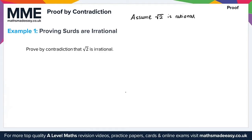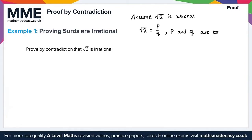Now if root 2 is rational, that means we can express it in the form root 2 equals P over Q. It's important to note here that P and Q must both be non-zero integers.